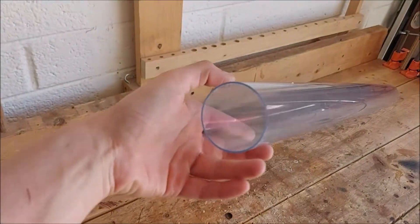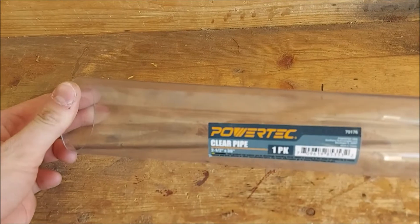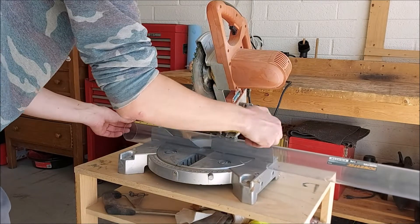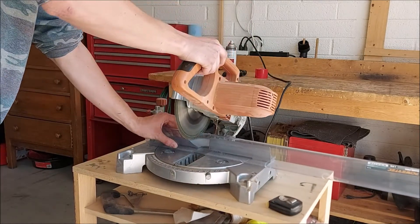Here I have a clear pipe that I bought online that is almost the exact diameter of a spray paint can. And so I'm going to take it to the miter saw and cut it at 15.5 cm so that it'll be the same length as well.